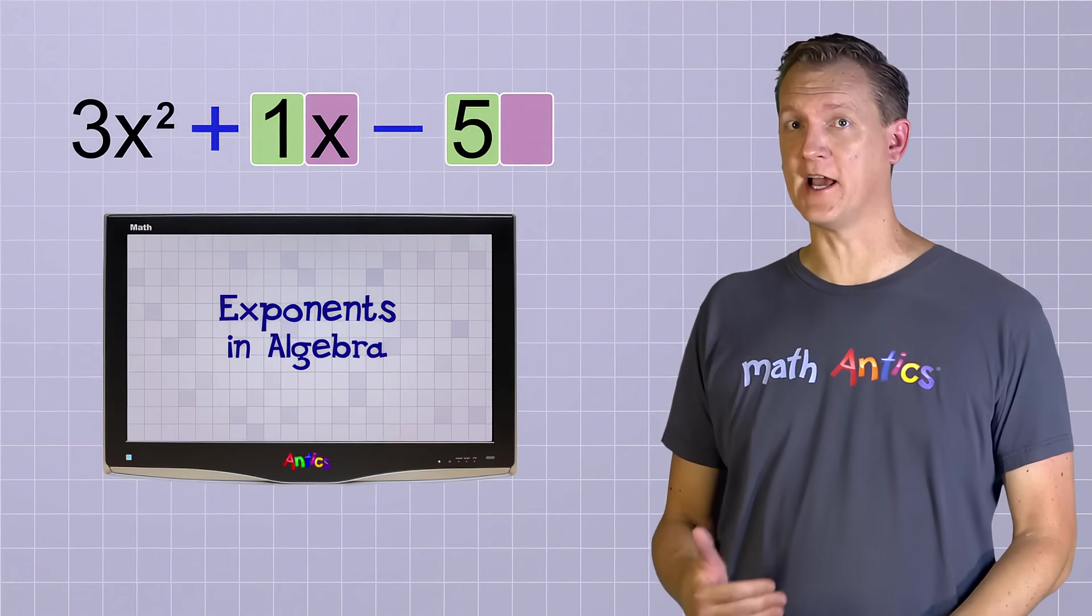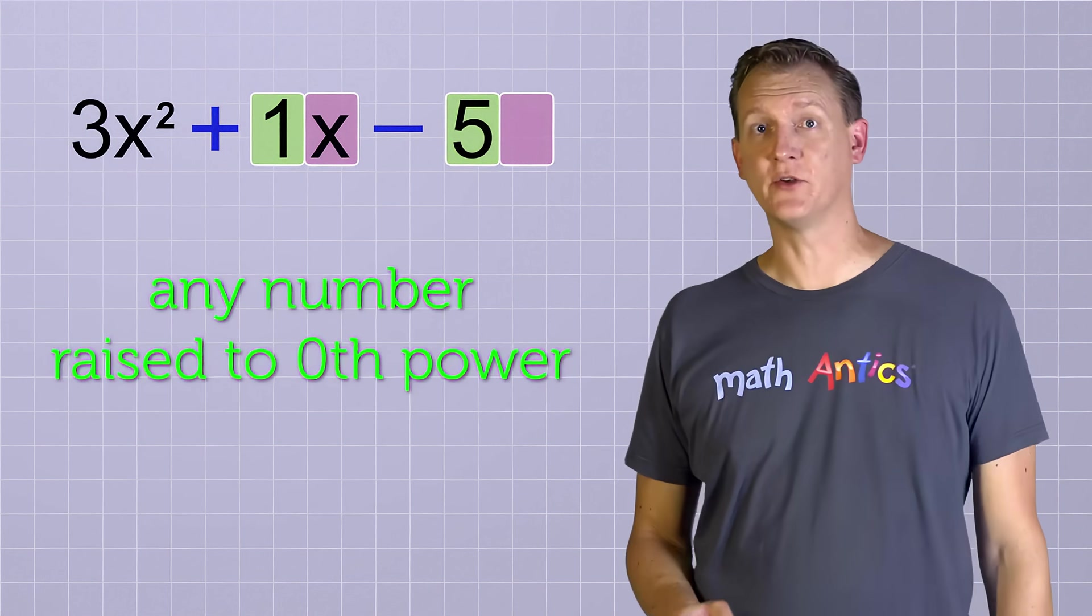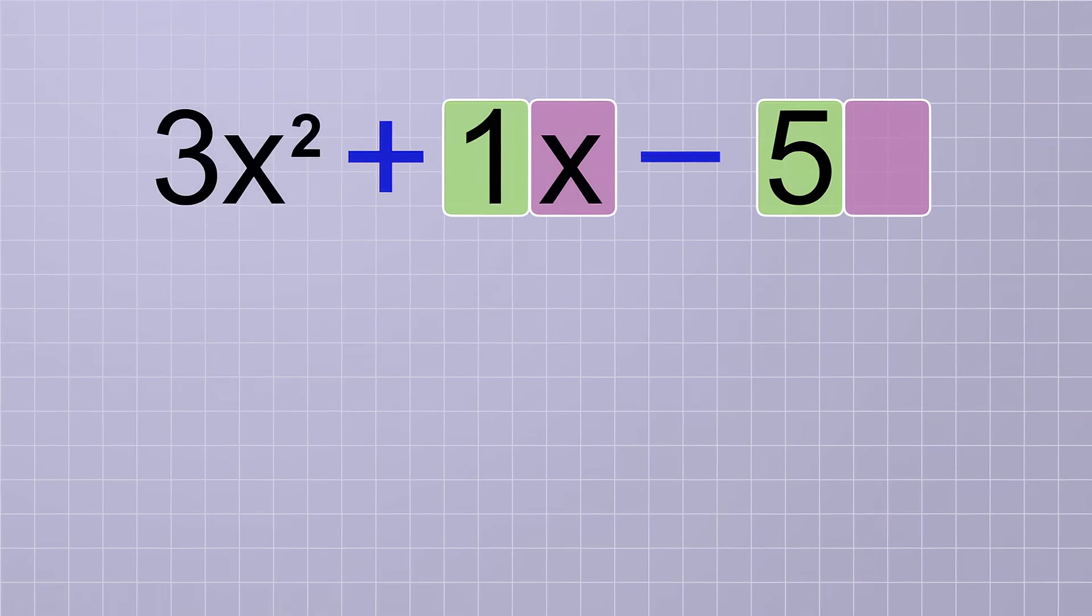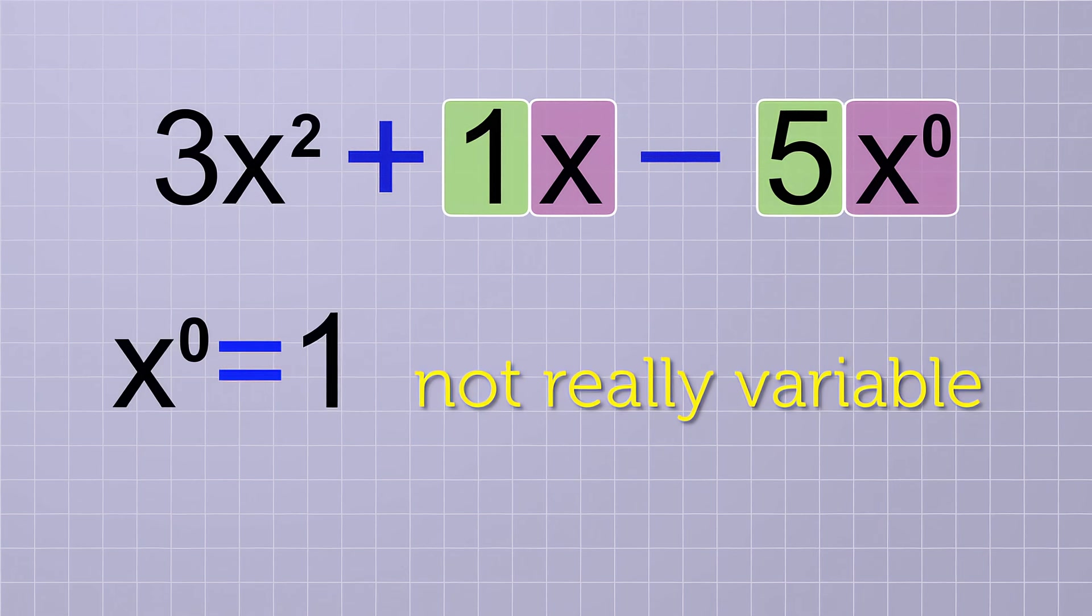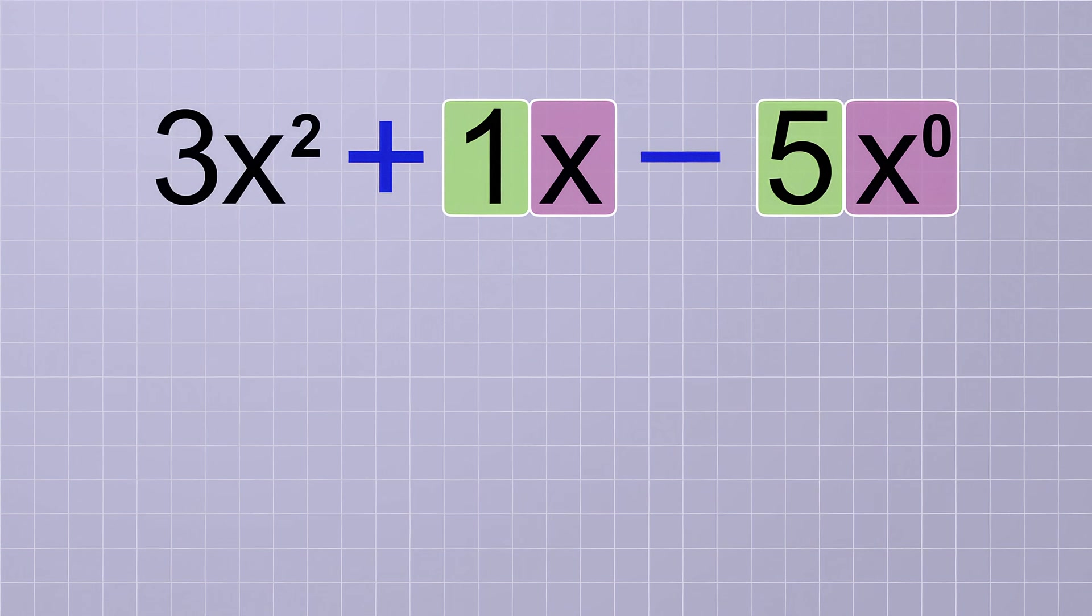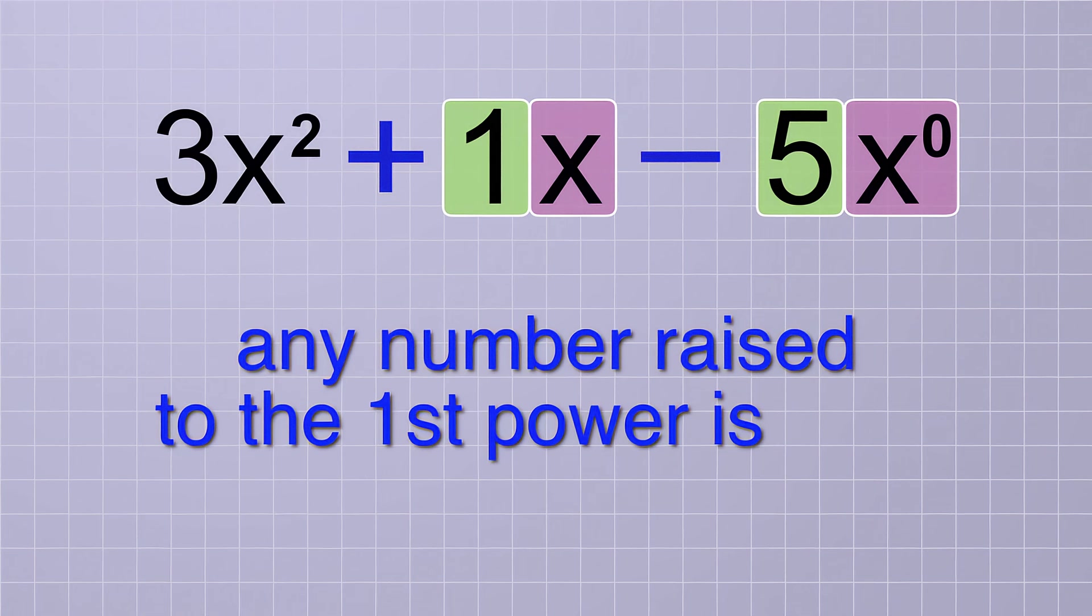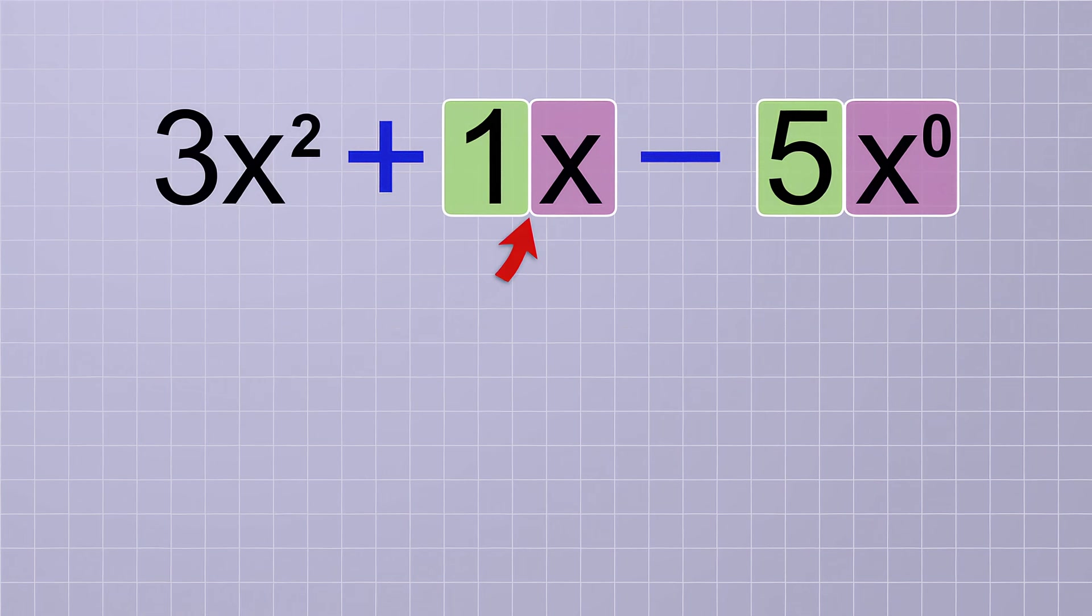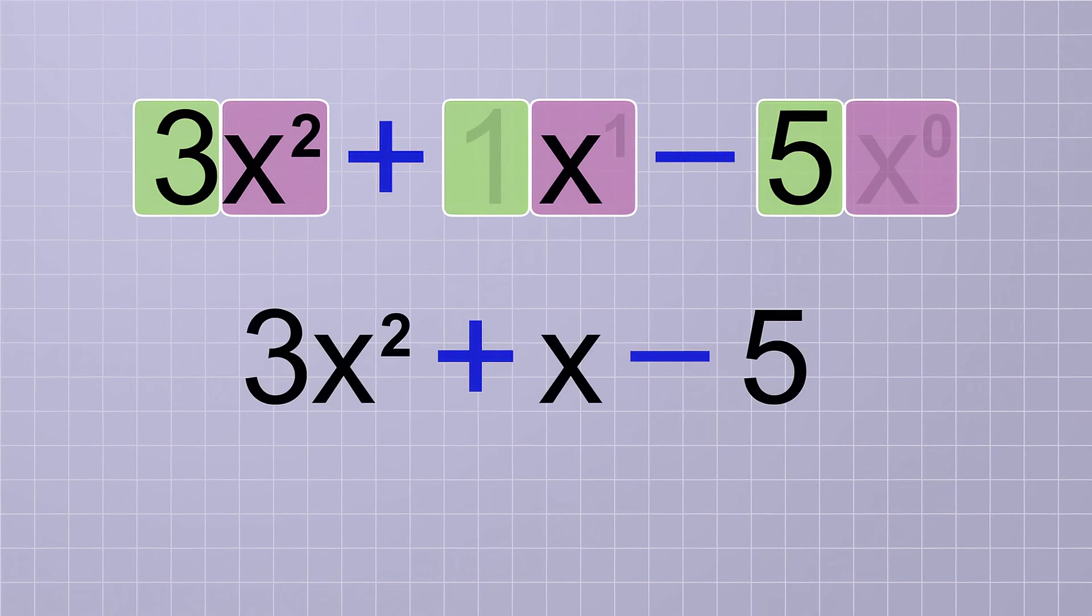Do you remember in our last video about exponents in algebra, we learned that any number or variable that's raised to the 0th power just equals 1? That means that we can think of this last term as having a variable, x, that's being raised to the 0th power. Since that would always just equal 1, it's not really a variable in the true sense of the word, and it has no effect on the value of the term. But it makes sense especially if you remember the other rule from the last video. That rule says that any number raised to the 1st power is just itself. Which helps us see that this middle term is basically the same as 1x raised to the 1st power. Now do you see the pattern? Each term has a number part and each term has a variable part that's raised to a power: 2, 1, and 0. But since x to the 0 is just 1, and x to the 1 is just x, and anything multiplied by 1 is just itself, the polynomial gets simplified so that it no longer looks exactly like the pattern it comes from.